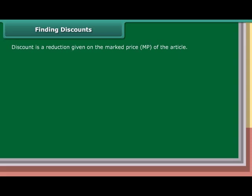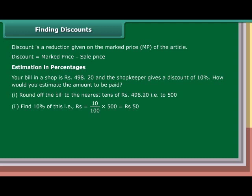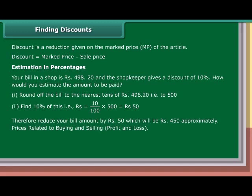Finding Discounts: Discount is a reduction given on the market price (MP) of an article. For a bill of Rs. 498.20 with a discount of 10%: round off the bill to the nearest Rs. 500. Find 10% of Rs. 500, which equals Rs. 10 upon 100 into Rs. 500, equals Rs. 50. Therefore, reduce the bill amount by Rs. 50, which gives approximately Rs. 450.